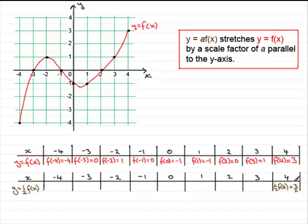If I plot that coordinate 4, 3/2, let's see where it would be. At x = 4, 3/2 is 1½, so you've got a point there. Notice how this point here has now been reduced by half.